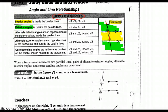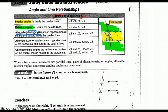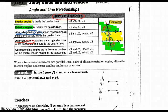The next term is alternate interior angles — they're interior angles on alternate, or opposite, sides of the transversal. Angle 5 alternates with angle 3, and angle 4 alternates with angle 6. Those are alternate interior angles. Alternate exterior angles would be angle 8 alternating with angle 2, and angle 1 alternating with angle 7 — they're on the exterior and on opposite sides of the transversal.